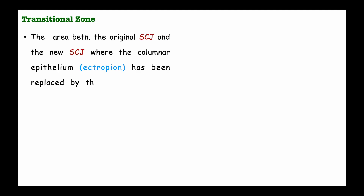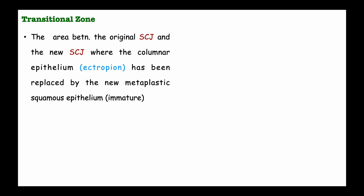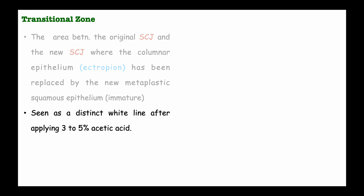The transitional zone is the area between the original squamous columnar junction and the new squamous columnar junction, where the columnar epithelium — now the ectropion — has been replaced by new metaplastic squamous epithelium, and so it is replaced by immature cells. It is usually found as a distinct line after applying three to five percent acetic acid and will appear as a wide line.